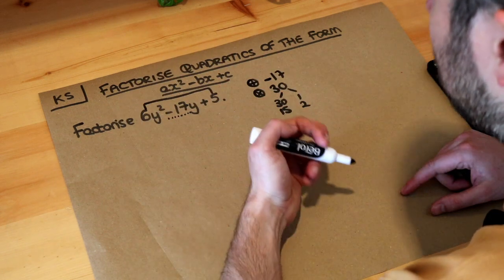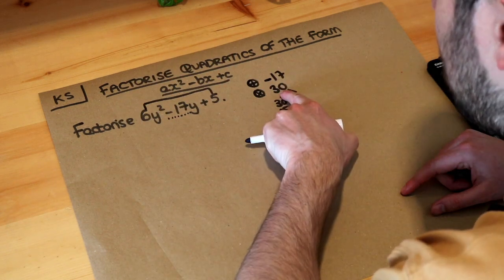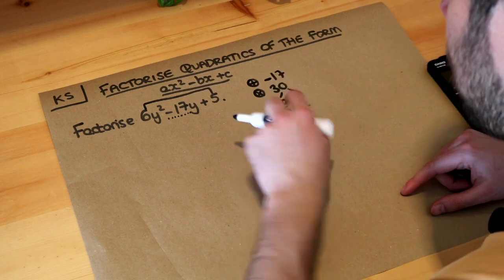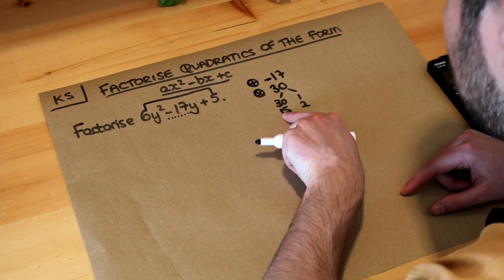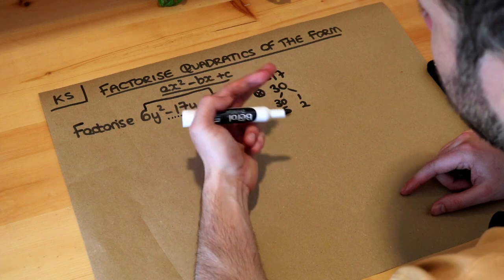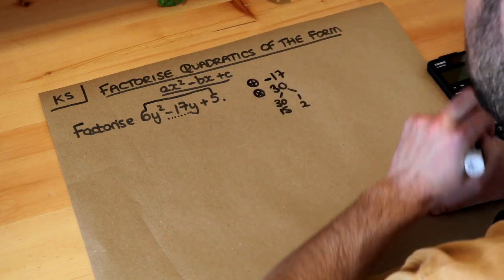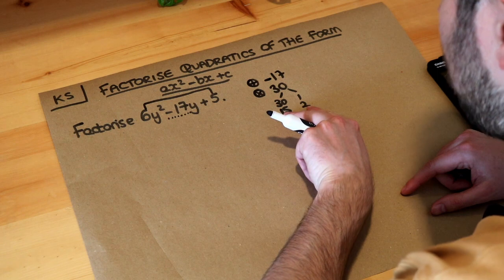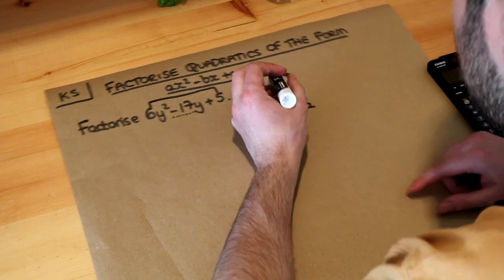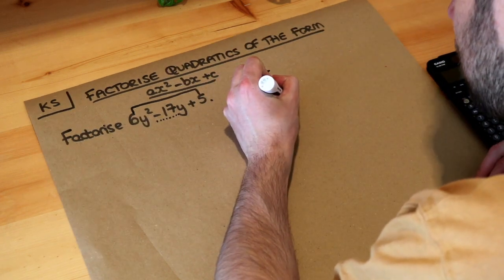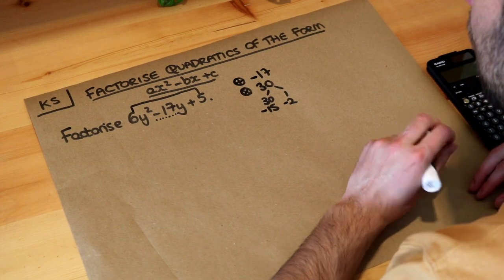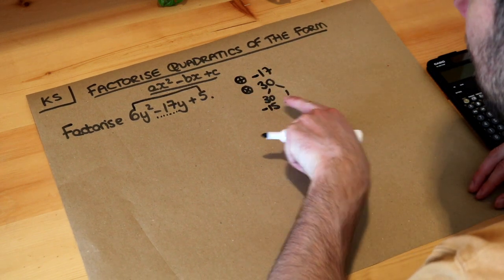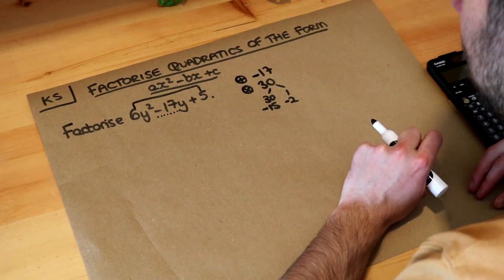If these two numbers multiply to give positive 30, either they're both positive — positive 15 and positive 2 — or they're both negative, because negative times negative is positive. Now 15 plus 2 doesn't make minus 17, but if they were both negative — minus 15 and minus 2 — they do add to give minus 17, because minus 15 plus negative 2 is minus 17.